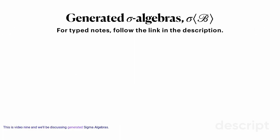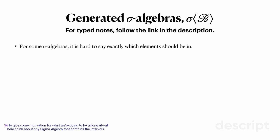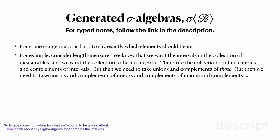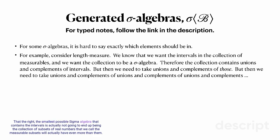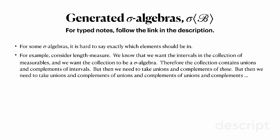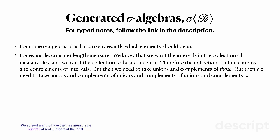Welcome to the next video in the Measure Theoretic Probability Series. This is video 9, and we'll be discussing generated sigma algebras. To give some motivation, think about any sigma algebra that contains the intervals. The smallest possible sigma algebra that contains the intervals is not going to end up being the collection of subsets of real numbers that we call the measurable subsets — we'll actually have even more than them. But we certainly want all the intervals, and we want a sigma algebra, so the smallest sigma algebra containing the intervals is at least what we want as measurable subsets.